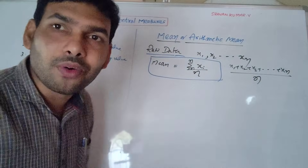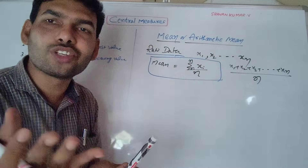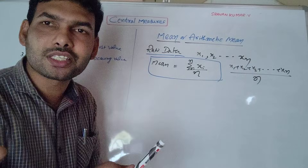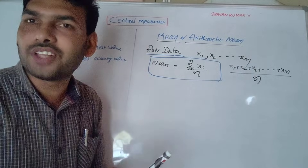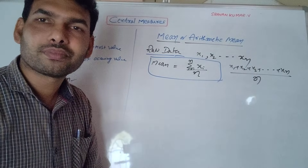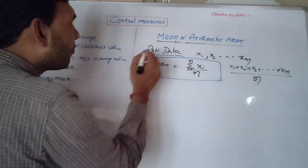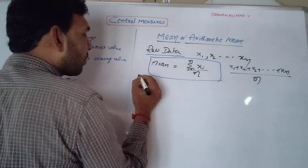For example, using raw data with three values: 3, 5, 6 — the mean is 3 plus 5 plus 6, divided by 3. That is how we calculate the mean for raw or ungrouped data.